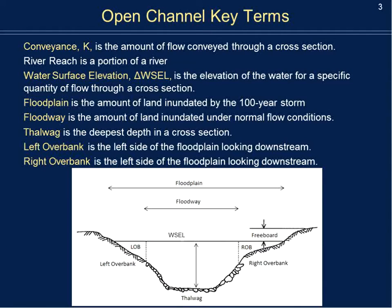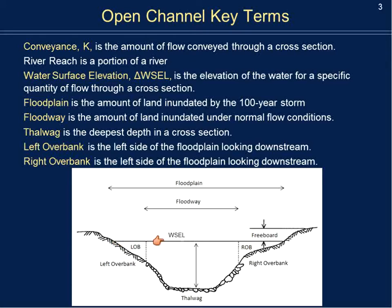The first key term is conveyance — essentially the flow that could be passing through a cross section of a river. Since Q equals V times A, conveyance is the flow that can be conveyed through that cross section. The water surface elevation, or WSEL, is the free surface of the cross section. This varies depending on the storm event you're analyzing — typically the 100-year, 50-year, or 500-year storm.